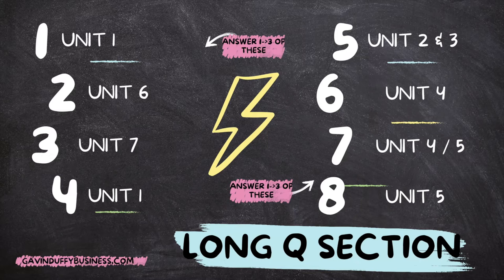That brings us to the long question section. In the long questions there are eight long questions in 2024, broken up into two parts. Part one has four questions and part two has four questions. What you need to do is pick one from each of the four questions in part one and part two, and then any other two questions — so you'll answer four in total.